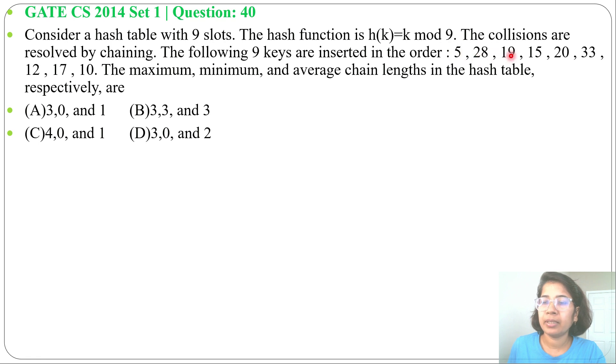First 5, then 28, 19, 15, 20, 33, 12, 17, and 10. The maximum, minimum, and average chain lengths in the hash table respectively are, and 4 options are given.